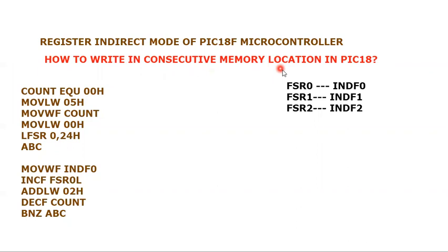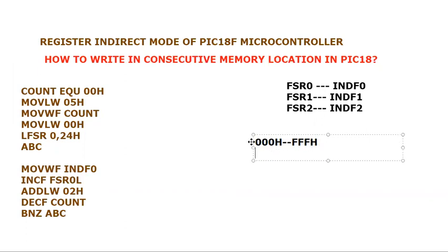To understand this tutorial we need to understand some registers which we haven't discussed yet on our channel for PIC18F microcontroller, and those registers are FSR0, FSR1, and FSR2. FSR register is a special register known as file select register. It is basically used to store the address of a file register location. The minimum address is 0x000 and the maximum address is 0xFFF, so it is a 12-bit address. We need a 12-bit register to hold this address.